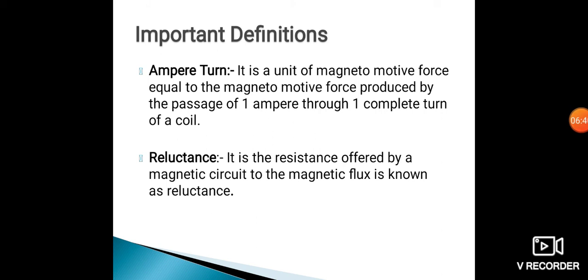Next is ampere turn. It is a unit of magnetomotive force equal to the magnetomotive force produced by the passage of one ampere of current through one complete turn of a coil. Hence the name is ampere turn — one ampere current flowing through one turn of a coil creates a force, and that unit of magnetomotive force is called an ampere turn.